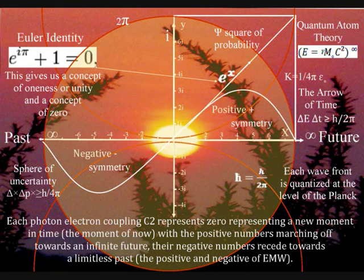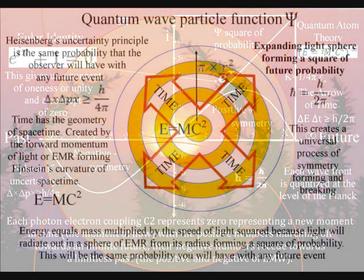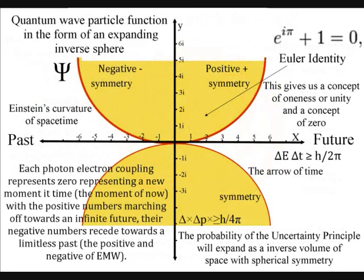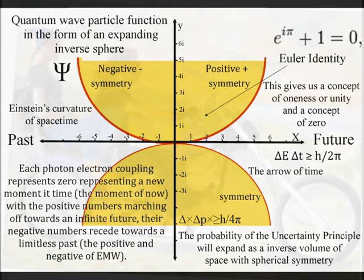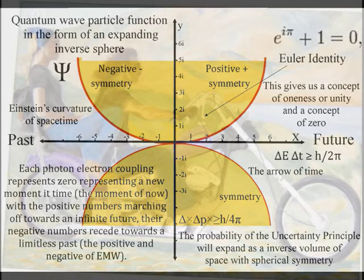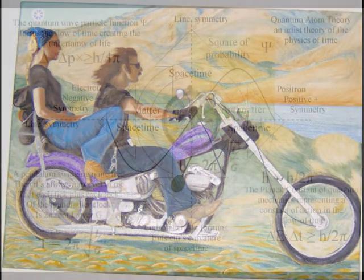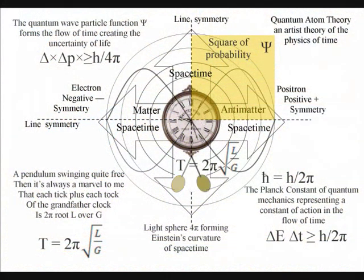The first is that the quantum wave particle function, or probability function, of quantum mechanics represents the forward passage of time itself, photon by photon. And the second is that Heisenberg's uncertainty principle, that is formed by the probability function, is the same uncertainty we have with any future event within our own reference frame. This process of continuous creation, or change, we see and feel as the flow of time itself, and we can interact with it, turning the possible into the actual.